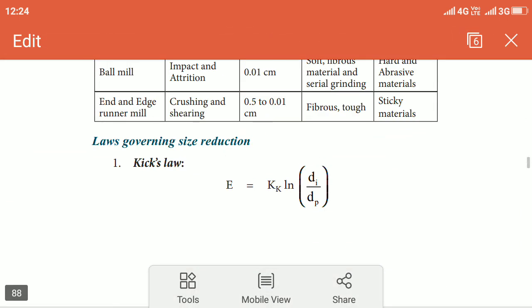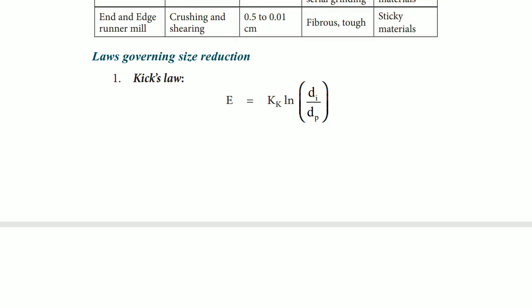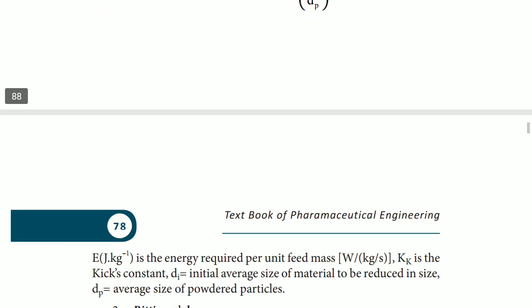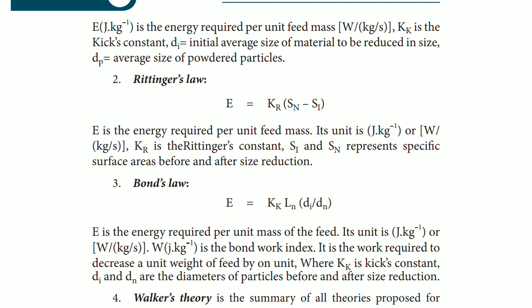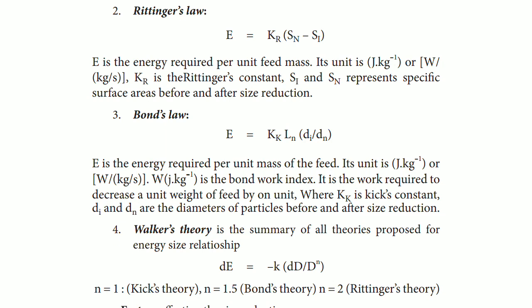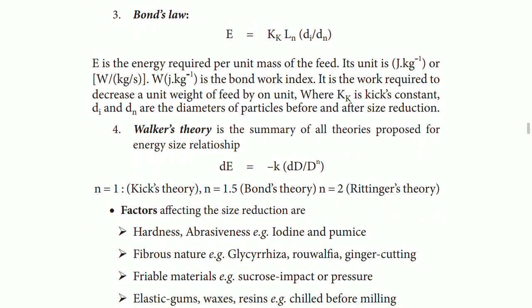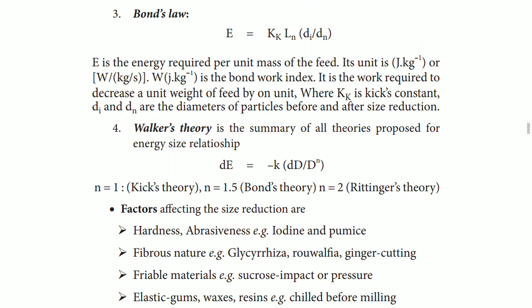I'll show you the different laws. Laws governing size reduction, they are the same as if you are asked in your theory exam also, what is size reduction, theory of size reduction, so you have to write these theories or the laws that govern. This is the Kick's law: E = K_K ln(D_i/D_p). E is energy required per unit feed mass, K_K is the Kick's constant, D_i is the initial average size to be reduced, D_p is the powdered material's average size. Rittinger's E = K_R(S_n - S_i), Bond's K_K ln(D_i/D_n), Walker's dE = -K_D dD/D^n. All this we have studied already in the theories of size reduction.